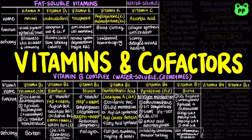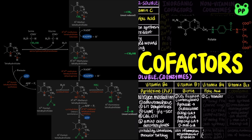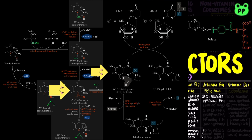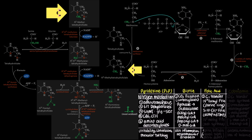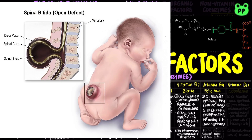Vitamin B9, also known as dihydrofolate or FH2, facilitates one-carbon transfer in nitrogen metabolism. N10-formyl-tetrahydrofolate serves as a precursor to purine. 5,10-methylenetetrahydrofolate serves as a methyl donor to dUMP, converting it to dTMP. N5-methyl-tetrahydrofolate is a substrate of methionine synthase, converting homocysteine to methionine. Vitamin B9 deficiency in pregnant women leads to neural tube birth defects known as spina bifida in newborns.